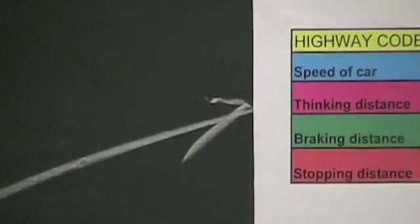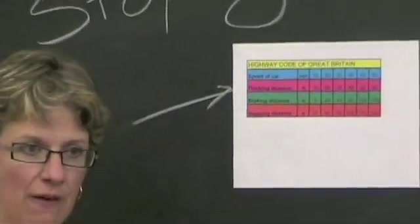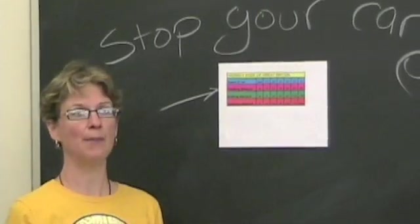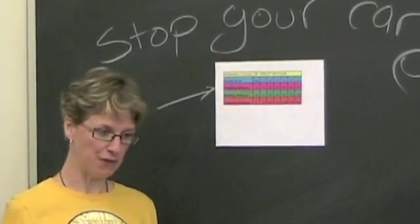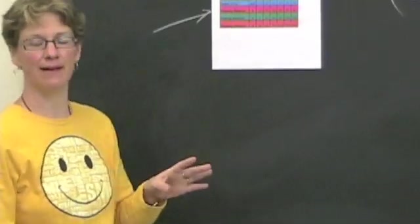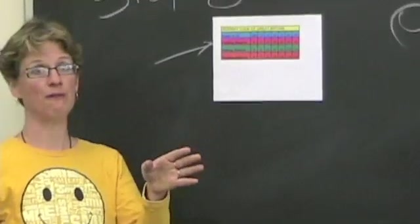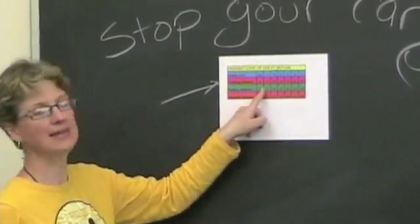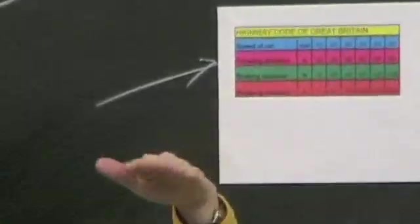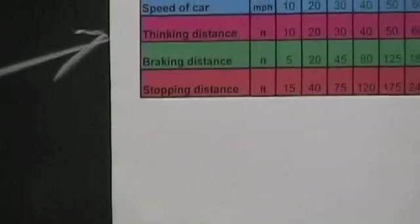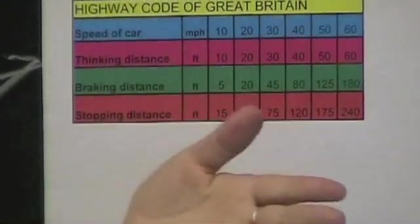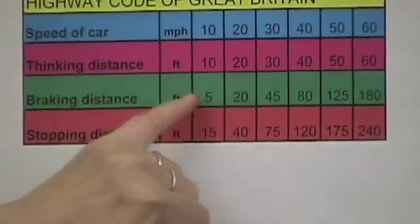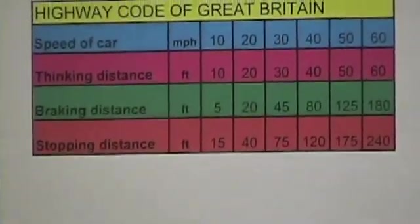Thinking distance is how far your car is going to travel in the time it takes your brain to register you need to stop until the time you put your foot on the brake. Believe it or not, there is a lag there and your car keeps moving while you are thinking about the need to stop. The braking distance is how far your car will go once you begin applying the brakes. You don't stop instantly. If you did, your body would go flying through the windshield.